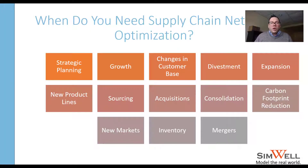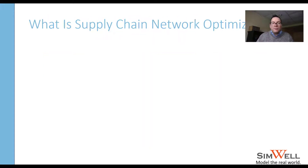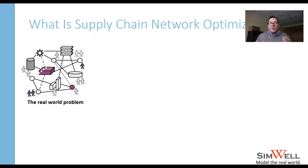When do you need supply chain network optimization? Anytime the supply chain is changing — when you're thinking about strategic planning, growth, changes in customer base, expanding or adding new product lines, making an acquisition, looking at carbon footprint reductions, entering new markets, changing inventory levels, or going through mergers. These are all reasons to trigger thinking about supply chain network optimization.